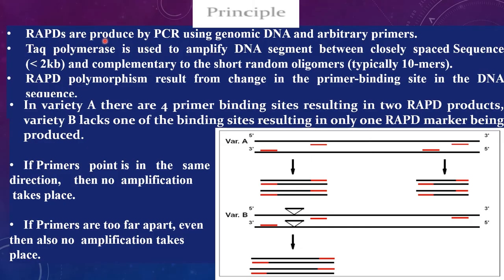The principles of RAPD: RAPDs are produced by PCR using genomic DNA and arbitrary primers. Taq polymerase is used to amplify DNA segments between closely spaced sequences complementary to short random oligomers, typically 10-mers. The polymorphism results from changes in the primer binding site in the DNA sequence.